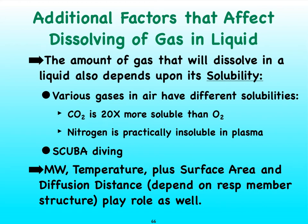But now if we recall what the partial pressure is for carbon dioxide at sea level, it's almost zero. On the other hand, the partial pressure for oxygen at sea level is about 160.